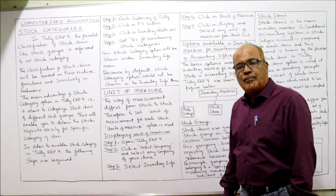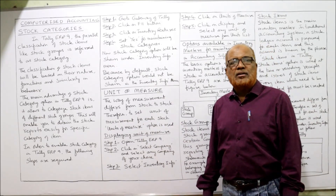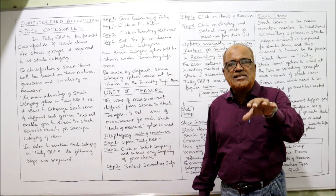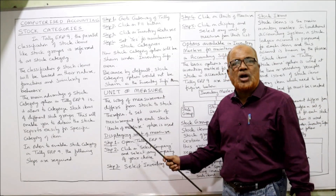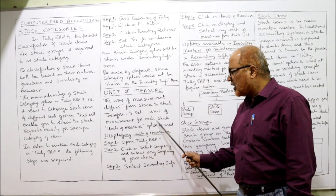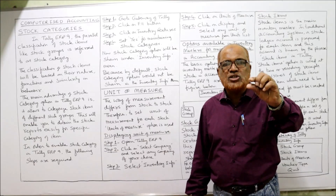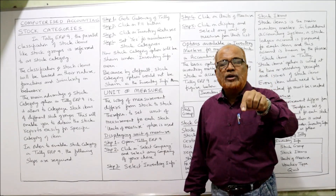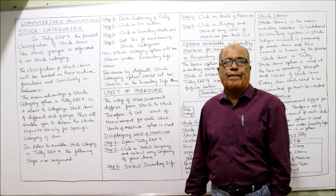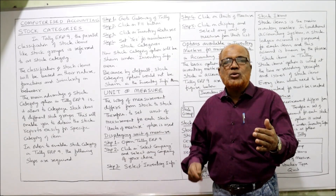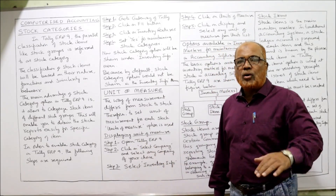The way of measurement differs from stock to stock — every stock item is not measured in the same units. Different units of measurement are required for different stock items. Therefore, to set a unit of measurement for each stock item, the Unit of Measure option is used in inventory masters. You go to the Unit of Measure option and select the appropriate unit for each stock item.